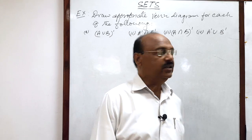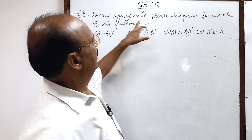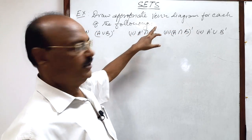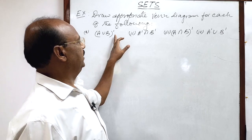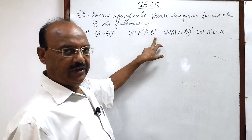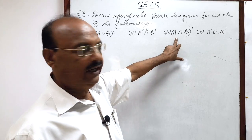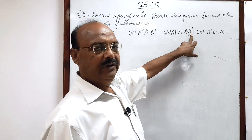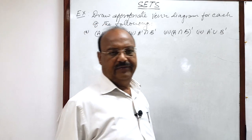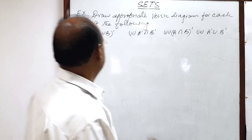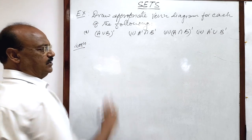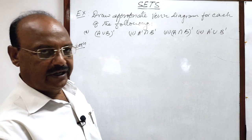The question is: draw appropriate Venn diagrams for each of the following. First, A union B whole complement. Second, A complement intersection B complement. Third, A intersection B whole complement. And fourth, A complement union B complement. So let us see the solution and how we can represent each using a Venn diagram.